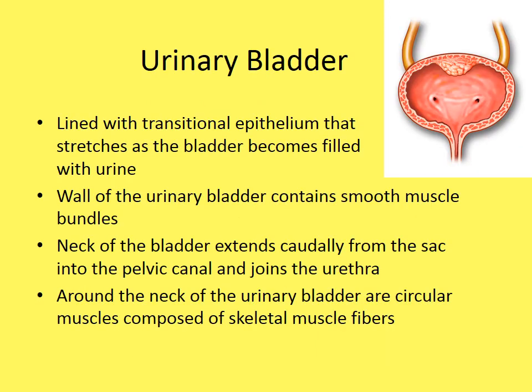The urinary bladder is lined with transitional epithelial cells — cells that slough off and are often seen during urinalysis — which stretch as the bladder fills. The bladder wall contains smooth muscle bundles. The neck of the bladder extends caudally into the pelvic canal and joins the urethra. Circular skeletal muscle fibers around the neck of the bladder give us the ability to voluntarily hold urine.